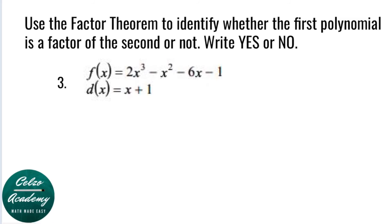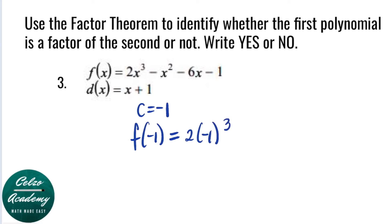Number 3. f of x is equal to 2x cubed minus x squared minus 6x minus 1, and d of x is equal to x plus 1. What is our c for number 3? Our c value here is negative 1, the opposite of plus 1. To determine whether x plus 1 is a factor of f of x, we need to evaluate f of c — in this case, f of negative 1. So now let's plug in negative 1 into f of x. We have 2 times negative 1 to the third, minus negative 1 to the second power, minus 6 times negative 1, and minus 1.